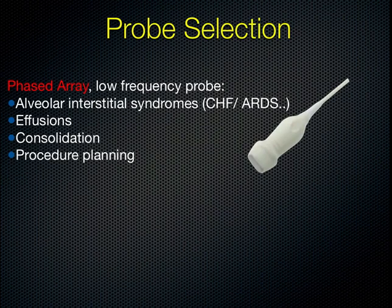There are two different probes we often use when looking at the lungs. The first is the phased array low-frequency probe — some people call it the cardiac probe — which gives you a high degree of penetration but not a great deal of resolution. This is best when looking at pulmonary edema, deeper effusions, consolidations, and surveying for procedure planning such as thoracentesis.